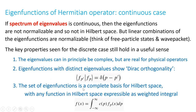This Dirac orthogonality property for the inner product of eigenfunctions with distinct eigenvalues allows us to create an effectively orthonormal set of eigenfunctions. Finally, the set of eigenfunctions is a complete basis for the Hilbert space, with any function in Hilbert space expressible as a weighted integral - since we have a continuous spectrum we integrate over dp of the eigenfunctions f_p times a weight c(p). If the eigenvalues p are real, as they are for physical operators, we can build up any function in Hilbert space using this integral, so the set of eigenfunctions is complete.